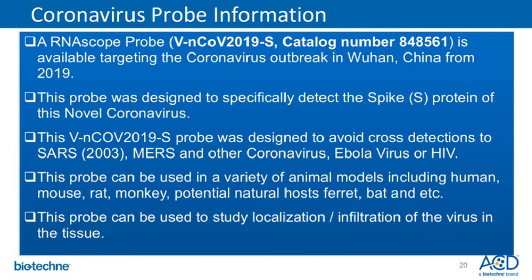The RNA Scope probe VN-COVE 2019-S, catalog number 848561, is available targeting the coronavirus outbreak in Wuhan, China from 2019. The probe was designed to specifically detect the spike S protein of this novel coronavirus. The VN-COVE 2019-S probe was designed to avoid cross-detection to SARS, MERS, other coronaviruses, Ebola virus, or HIV. The probe can be used in a variety of animal models including human, mouse, rat, monkey, potential natural hosts, ferret, bat, and others.